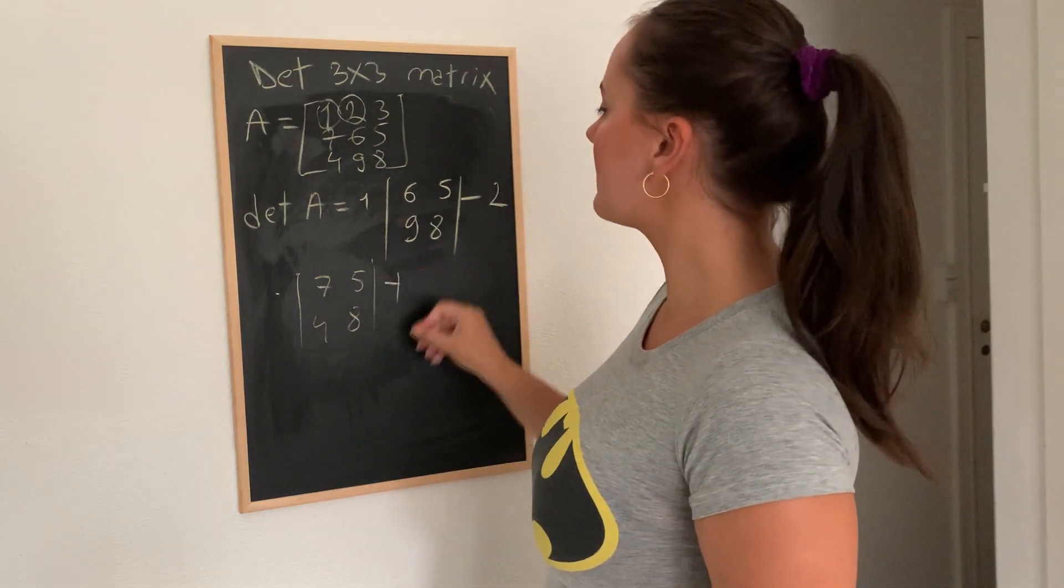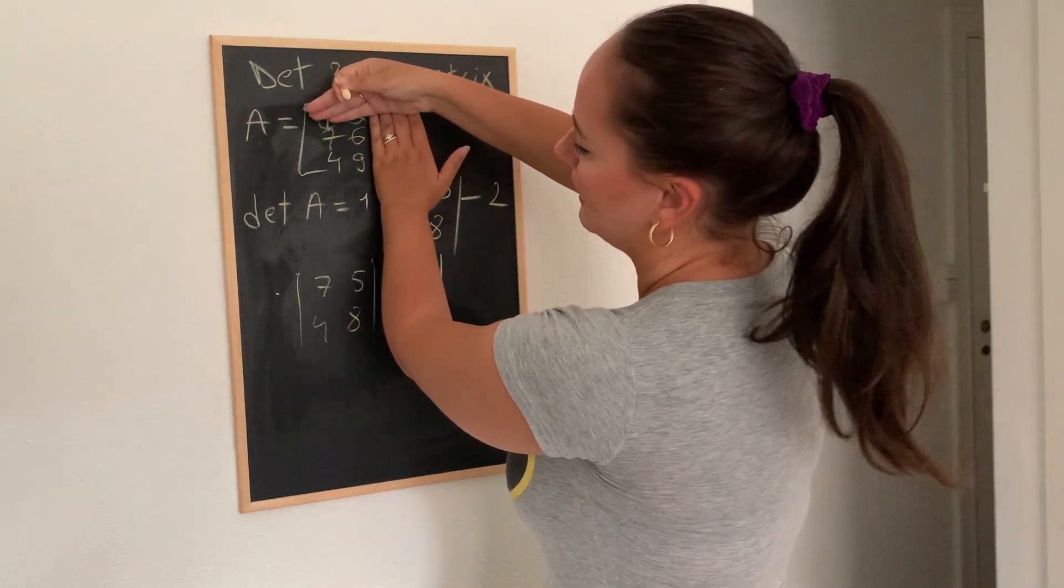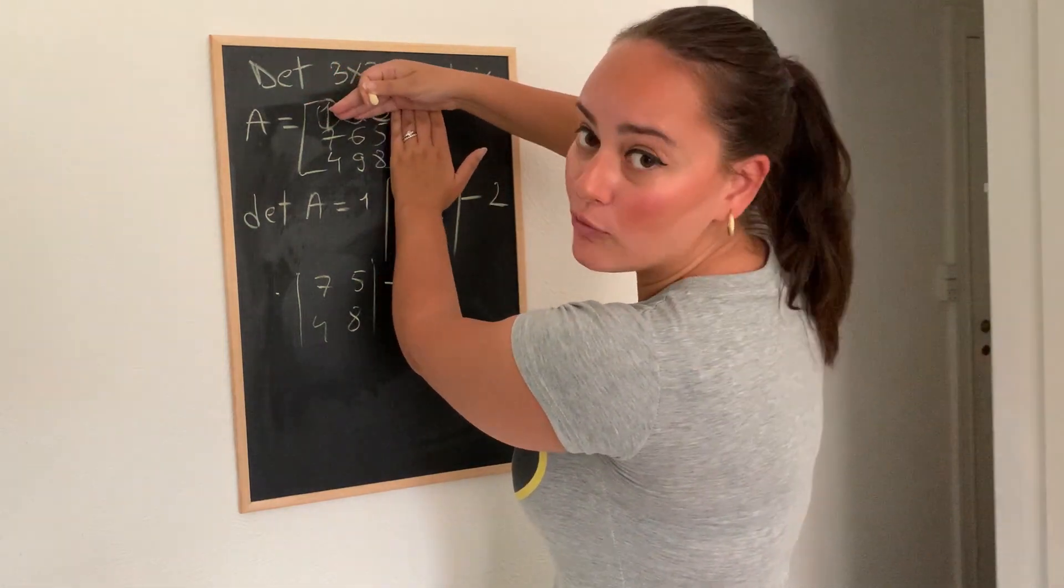Okay, and now the last element, which is 3, we're going to multiply it by the remaining matrix, which is 7, 6, and 4, 9.